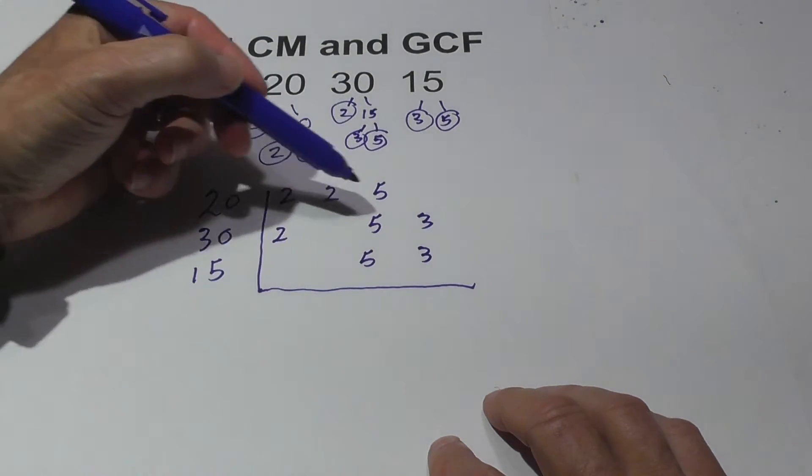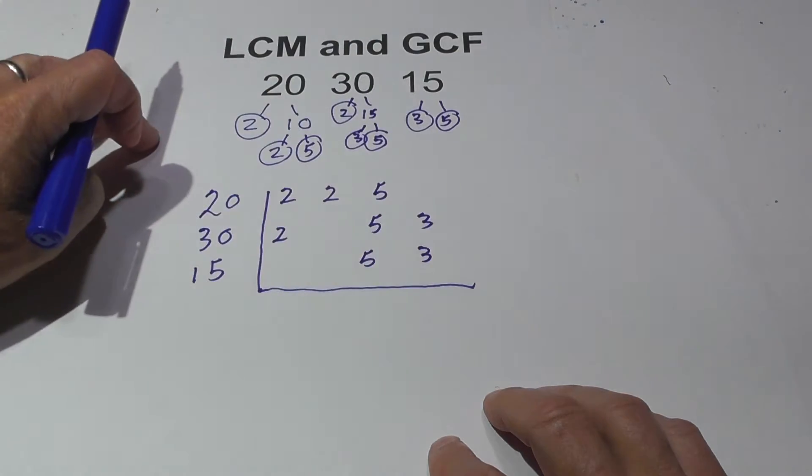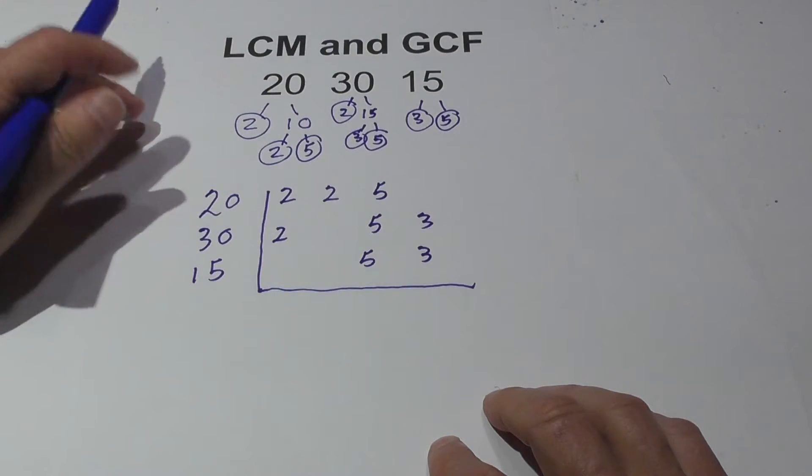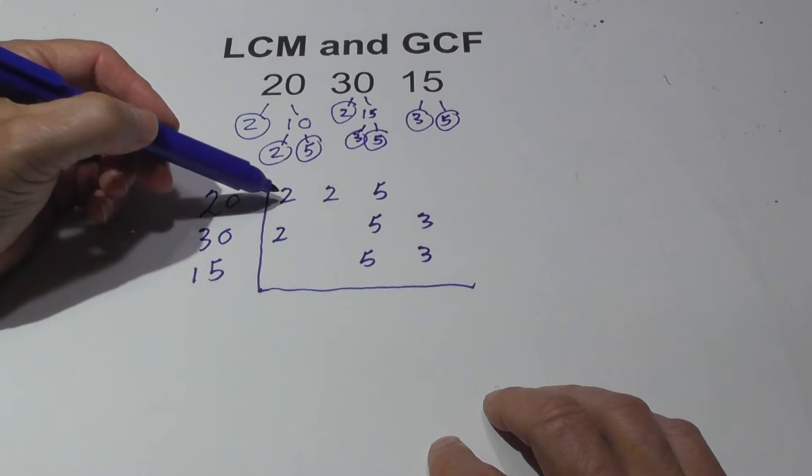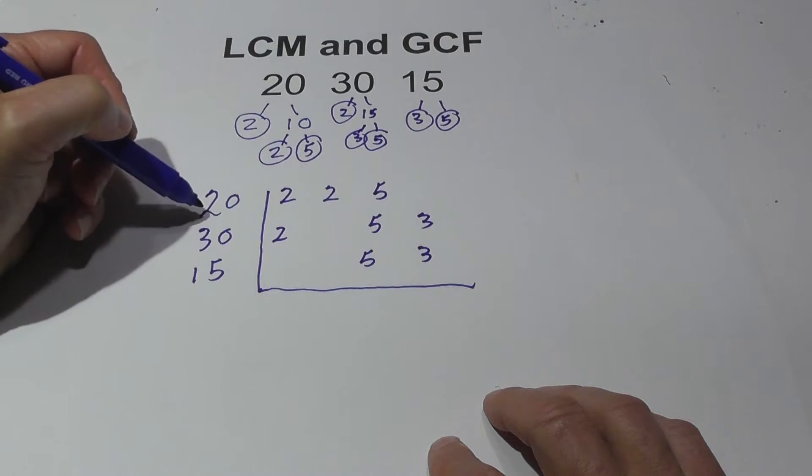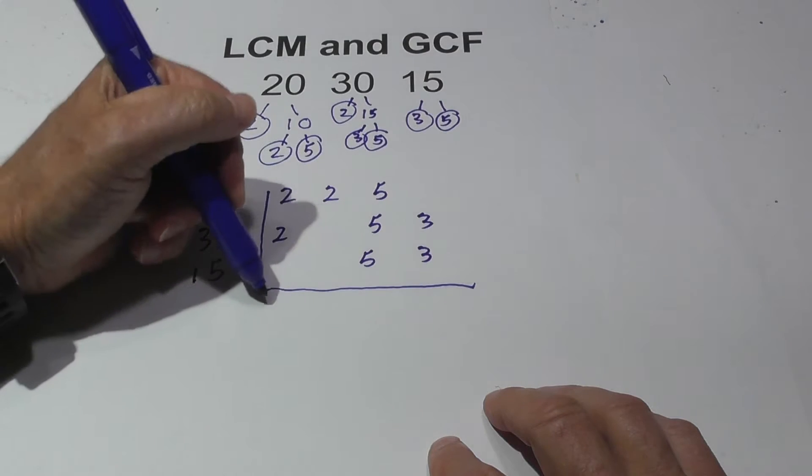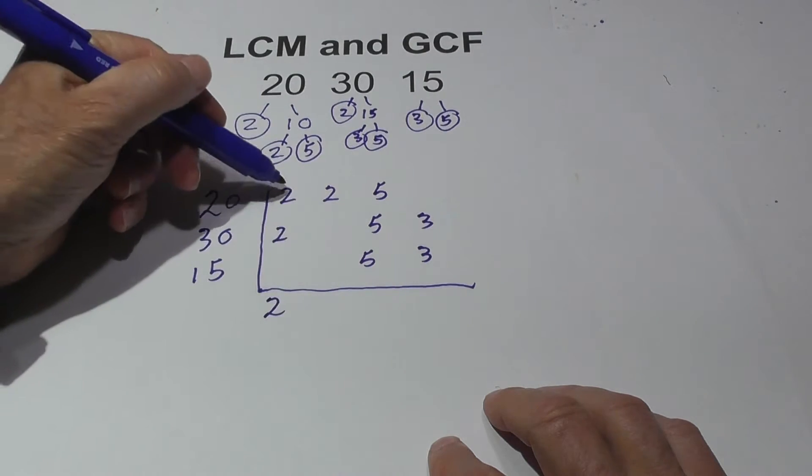Now for the LCM, all you do is basically multiply these numbers together, but use this rule. If you have 2 or 3 in the same column, in other words, in the same numbers, then only use one number. So I'm going to bring down only 1, 2.